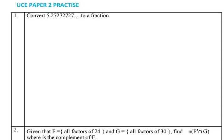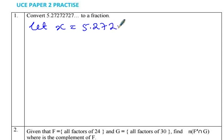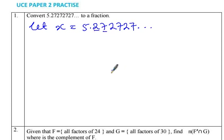Question 1: we are supposed to convert that to a fraction. First step: let any unknown, say x, equal to the given recurring decimal number. That's our recurring decimal number. When converting recurring decimals into fractions, we need to pay attention to the decimal part — the numbers after the decimal point. All the numbers that appear after the decimal point are repeated. We only have a 2 and 7.